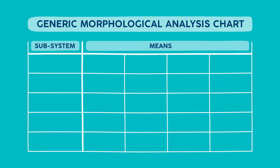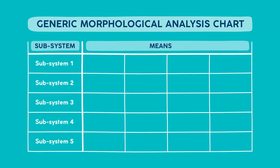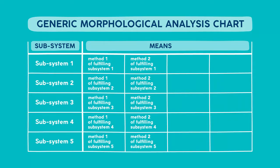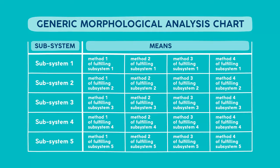Let's look at a generic chart. Here we can see a series of sub functions. For a given sub function, we have a row of corresponding means of fulfilling that sub function.